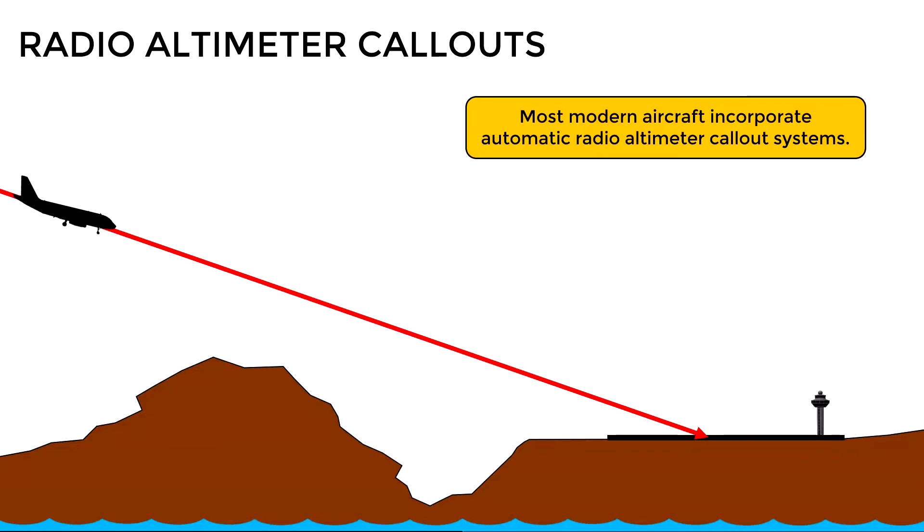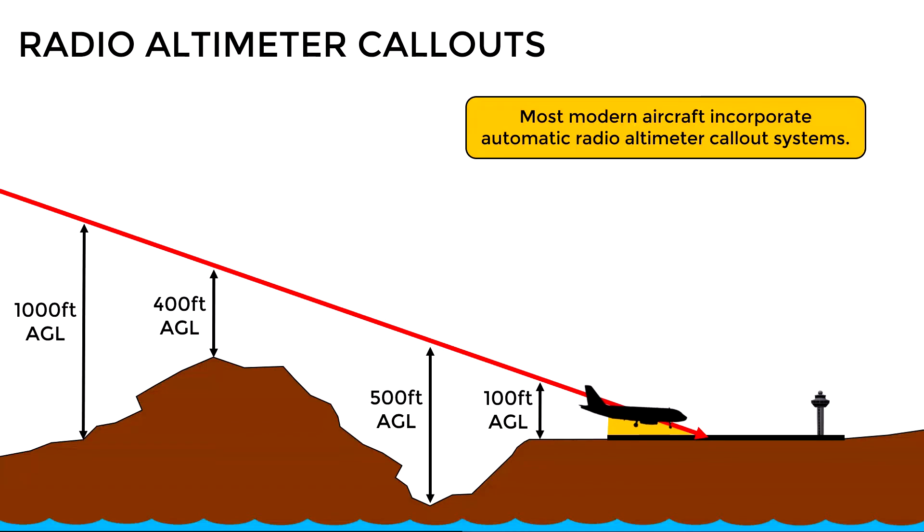Such as this one at 1000 feet: 'one thousand.' This way at certain heights above the ground, some callouts will sound in the cockpit like this: '400.' Now despite the aircraft is descending, there might be some fluctuations on the radio altimeter indications due to the irregularities of the terrain. '500, 100, 50, 40, 30, 20, 10.'